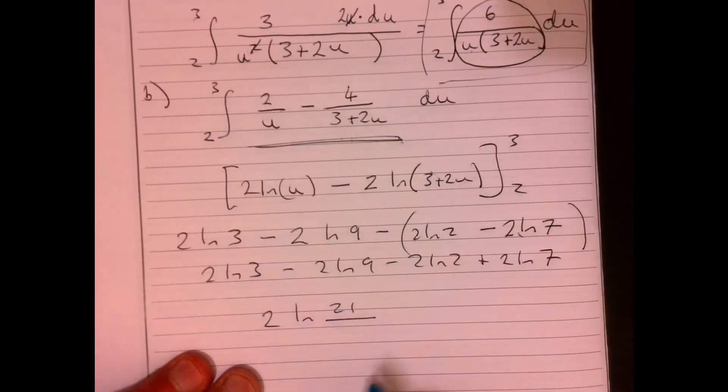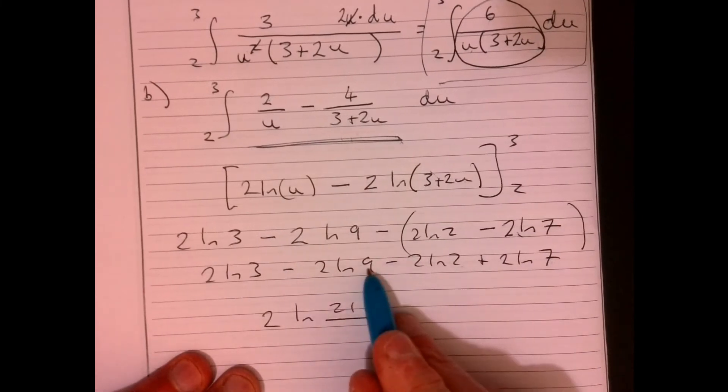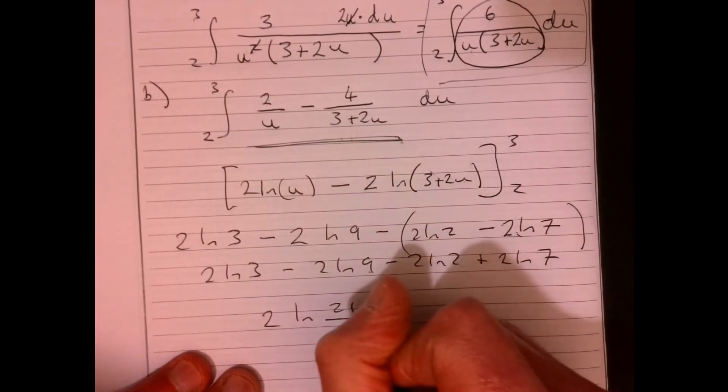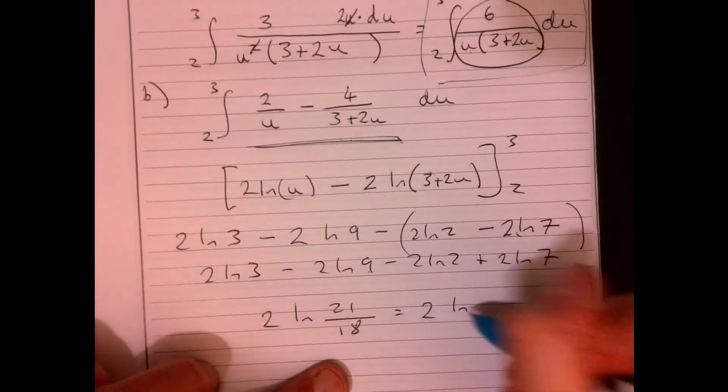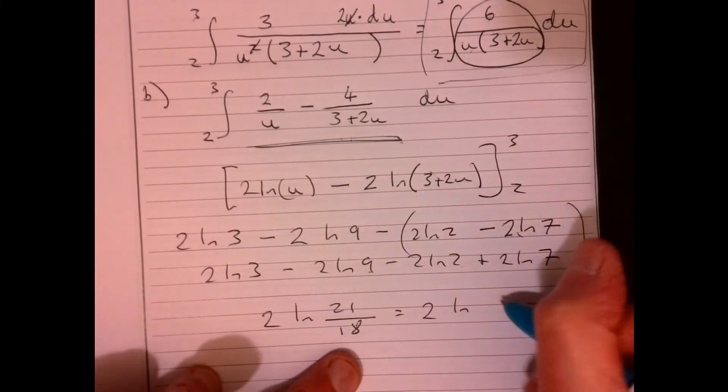So it's going to be 21. And then I've got minuses here. So they're going to go on the bottom. So they're going to be 18. If I cancel this down, that's just going to give me seven over six.